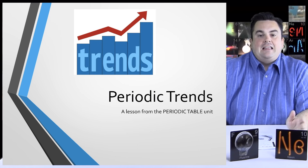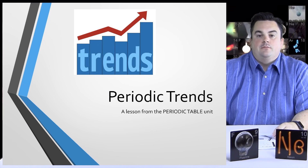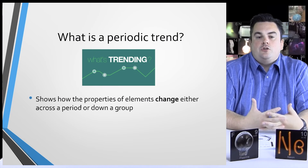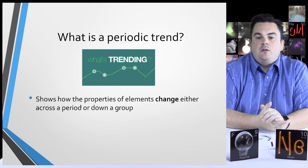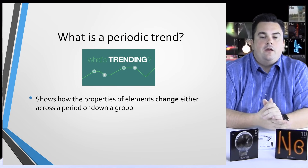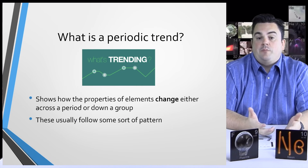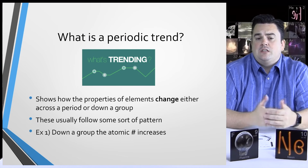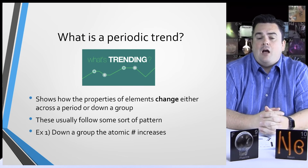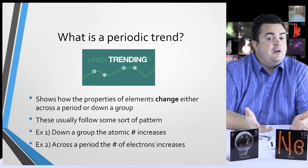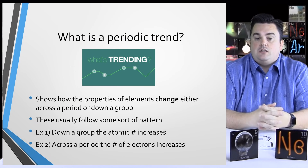Periodic trends — a lesson from the periodic table unit. What is a periodic trend? Get your periodic tables out! Periodic trends show how the properties of elements change either across a period or down a group. These usually follow some sort of pattern. For example, if you look down a group, the atomic number increases. If you look across a period, the number of electrons increases.